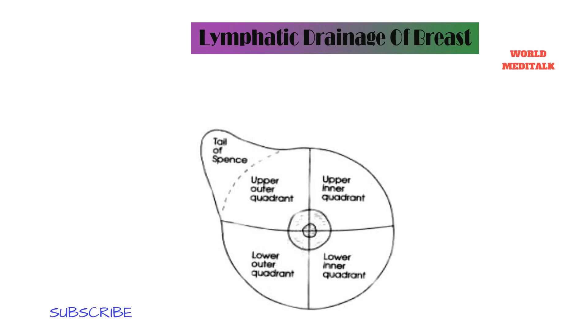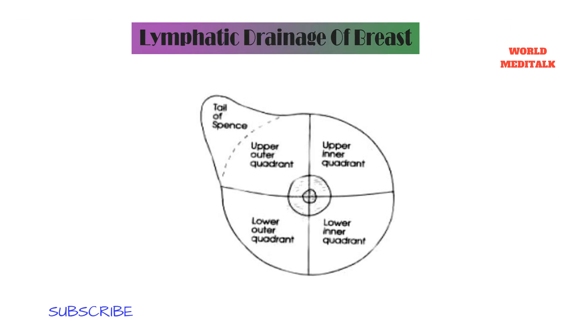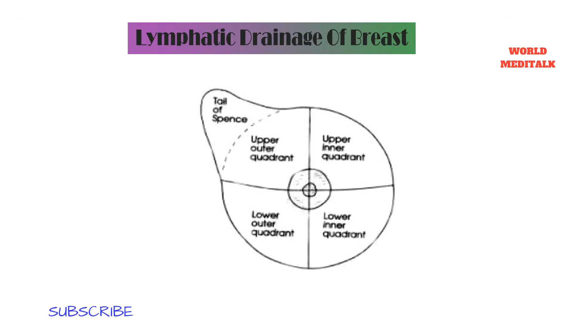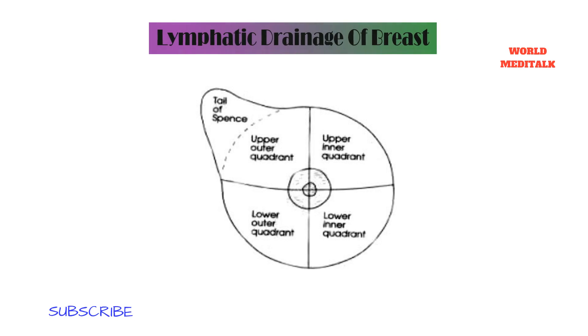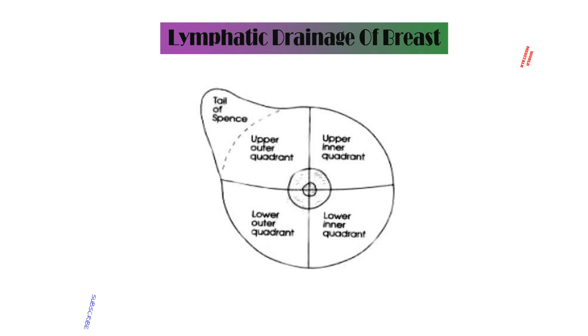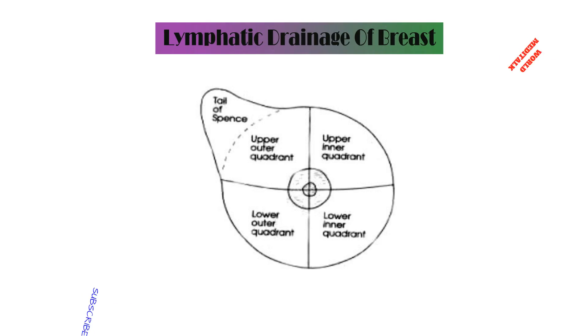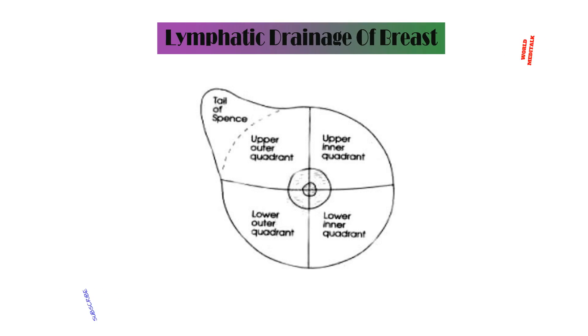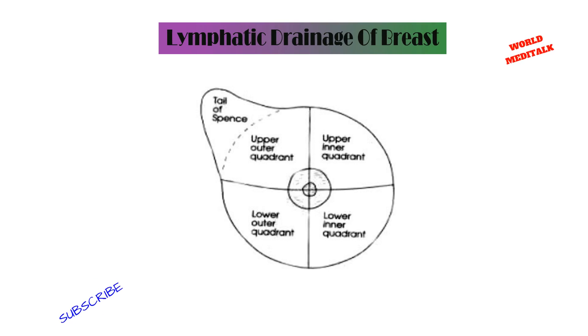To understand the lymphatic drainage of the breast, we divide the breast into four quadrants: upper, lower, medial, and lateral. The lateral part mostly drains into the pectoral group of lymph nodes and finally into the apical group. The upper part of the breast drains directly into the apical group, also called the subclavicular group of lymph nodes.